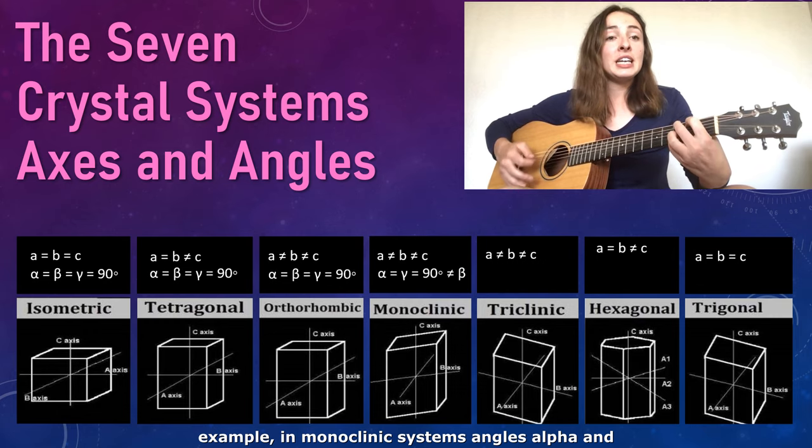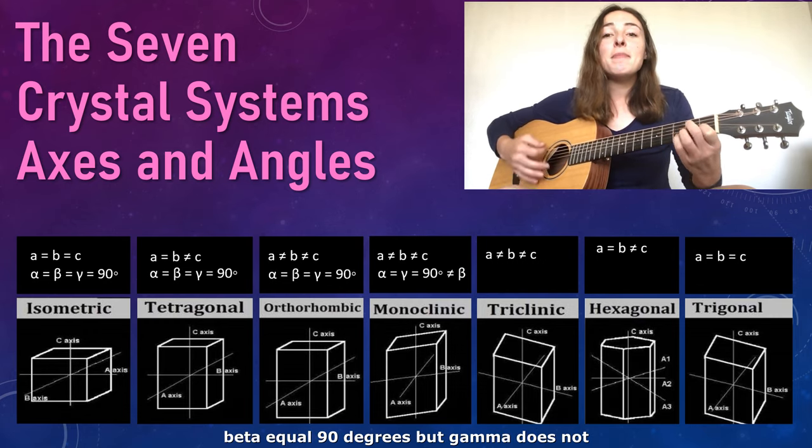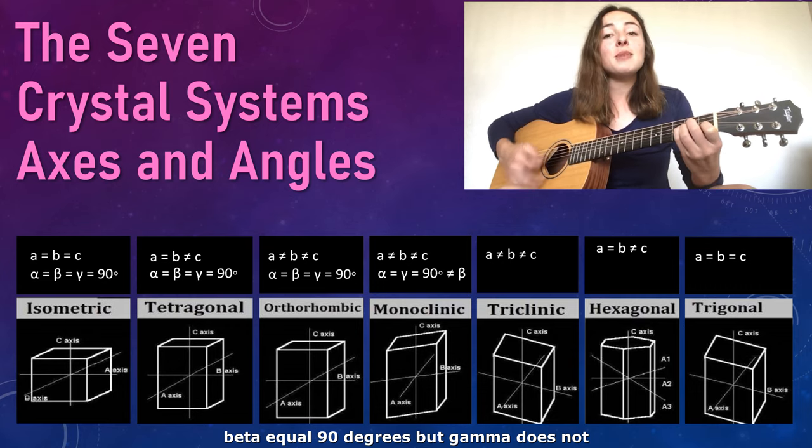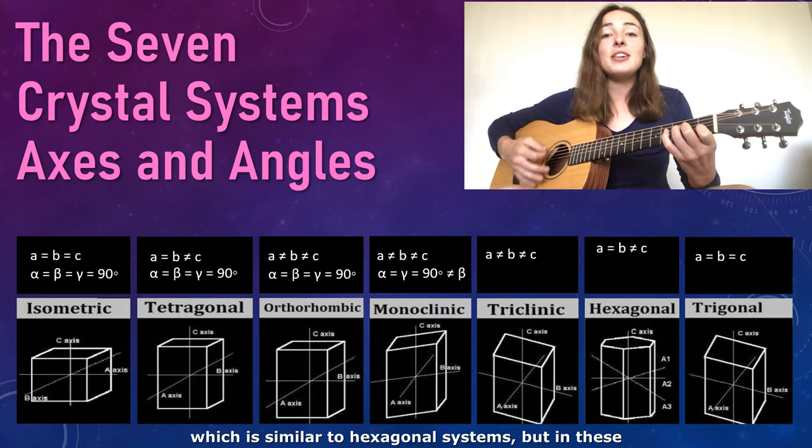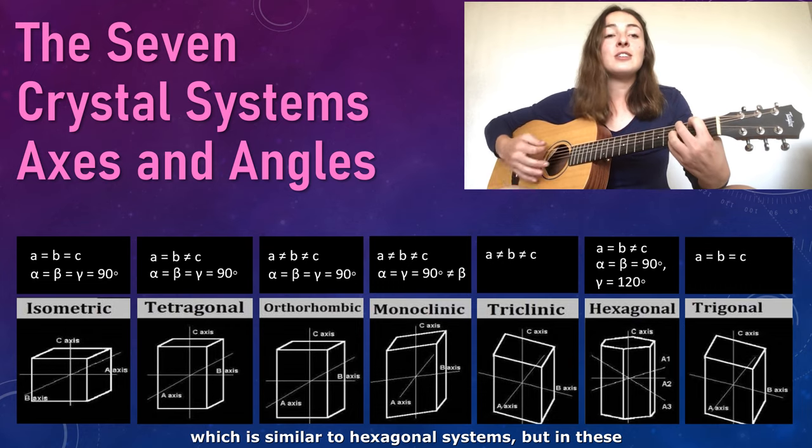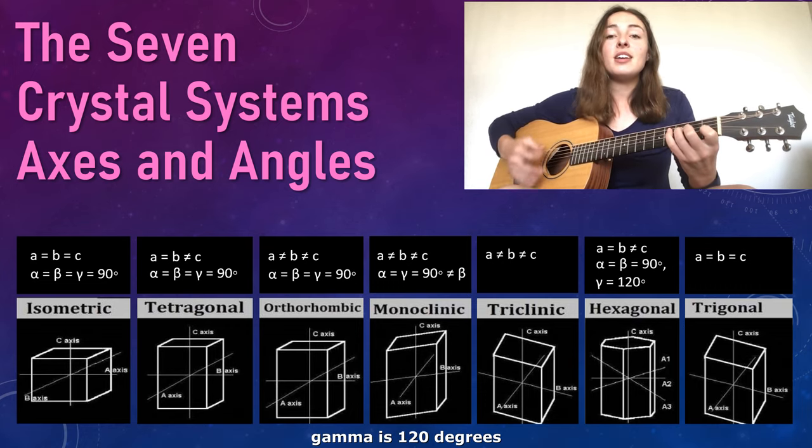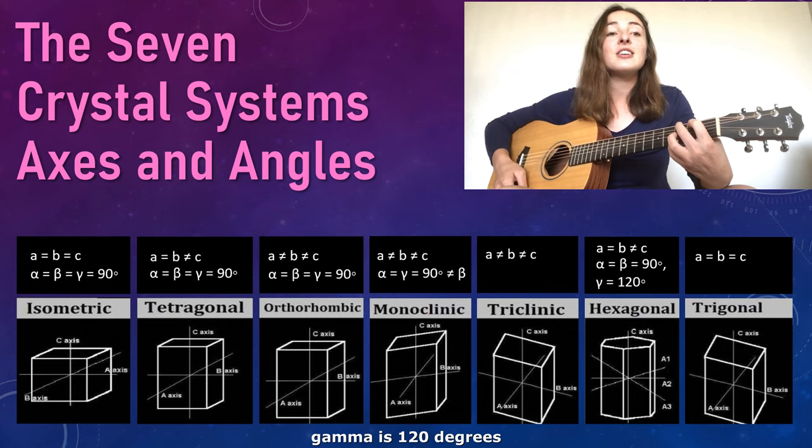For example, in monoclinic systems, alpha and beta equal 90 degrees but gamma does not, which is similar to hexagonal systems but in hexagonal gamma is 120 degrees.